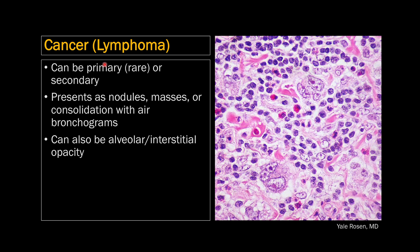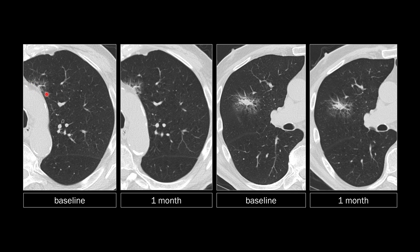C stands for cancer — two kinds. First, lymphoma, which can be primary (rare) or secondary (more common) in the lung. Lymphoma presents as nodules, masses, or consolidations with air bronchograms — that's the classic appearance — but can also be an alveolar or interstitial opacity. In one example, there was ground glass opacity with intralobular septal thickening in the left upper lobe, unchanged one month later, and a contralateral central nodule with surrounding ground glass and septal thickening, also stable — both were pulmonary lymphoma.